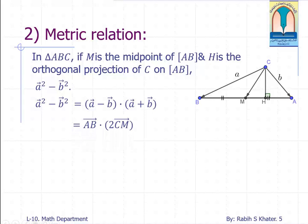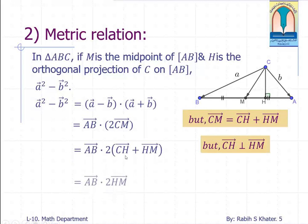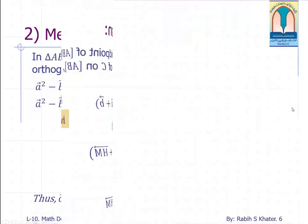Now what can we say about the vector CM? Can we write it as a sum of two vectors, one in the direction of vector AB and one orthogonal to the vector AB? Yes. CM equals CH plus HM. Distributing the dot product we will get AB vector dot HM vector double HM vector. Thus, metric relation.